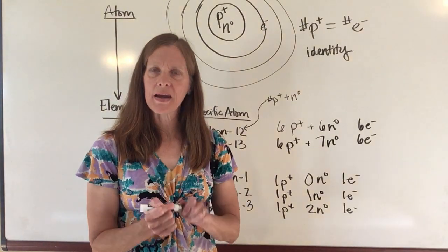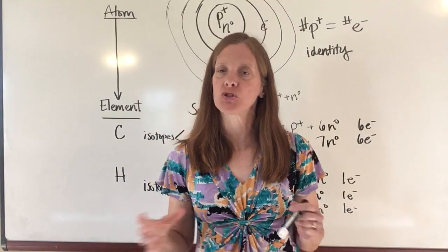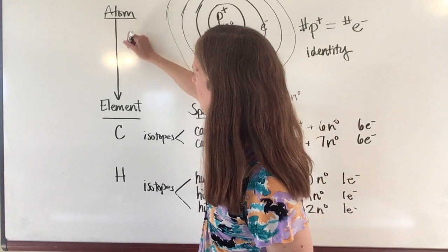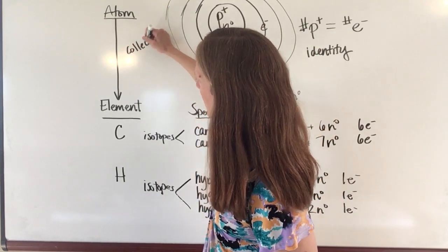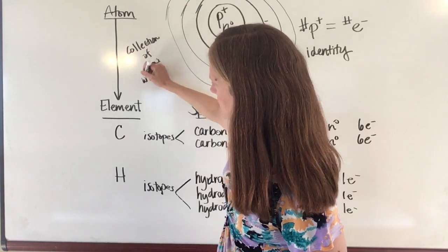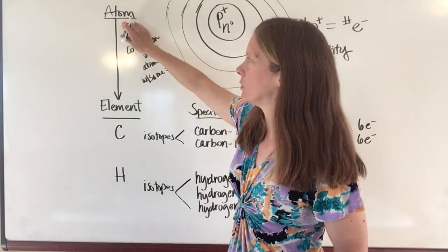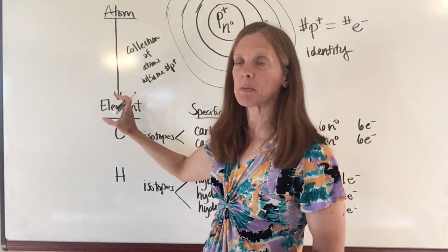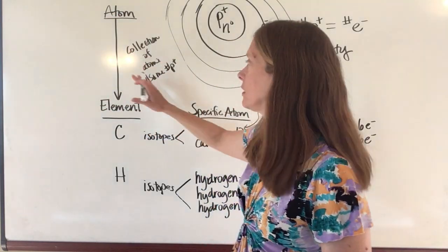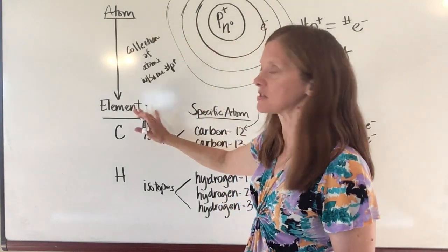All right, so that is the basics of what an atom looks like, how atoms can vary from one to another within an element. You do need to know that if I have a collection of atoms that all have the same number of protons, then I'm going to have an element. Remember this piece, because I'm going to have this little part of this diagram in the next video and I'm going to add another section to it. So atom—a collection of atoms with the same number of protons is going to make an element.